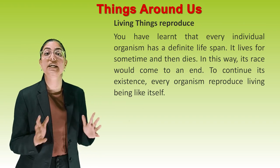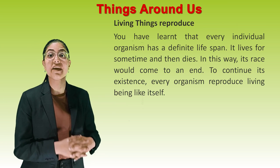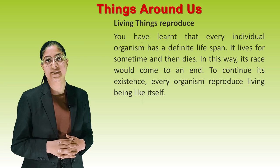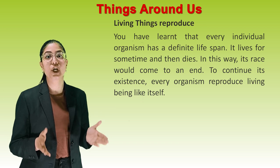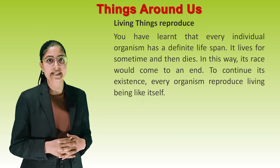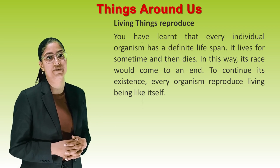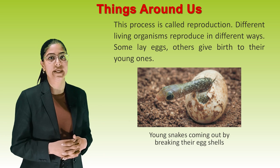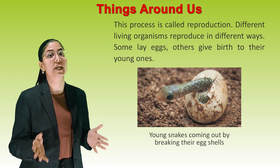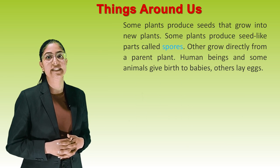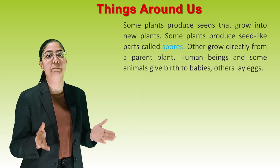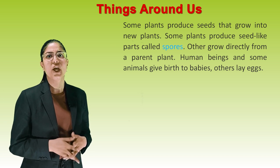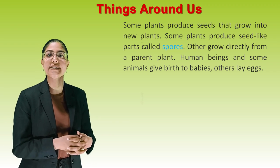Next, living things reproduce. Every individual organism has a definite lifespan; it lives for some time and then dies. To continue its existence, every organism reproduces living beings like itself — this process is called reproduction. Different living organisms reproduce in different ways. Some lay eggs, others give birth to their young ones. Some plants produce seeds that grow into new plants, and some plants produce spore-like parts called spores. Others grow directly from a parent plant. Human beings and some animals give birth to babies; others lay eggs.